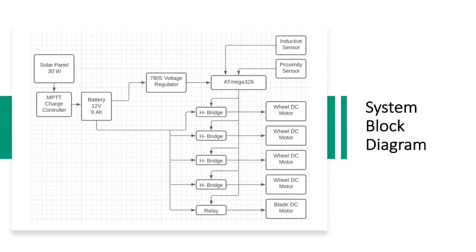Here's the block diagram for our system, where each block represents a different module of our project. The solar panel charges the battery using the charge controller, and the battery powers the whole system. The sensors tell the microcontroller when to stop and turn, and the H-bridge chips are used so the wheels can move in reverse when turning. A relay was used to turn the blade motor on and off.